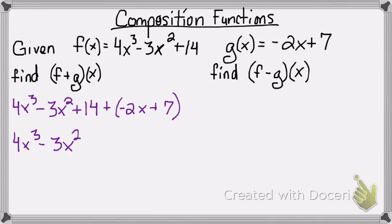And then just to stay in order, I'll bring down my negative 2x because there aren't any like terms. But now 14 plus 7, that gives me 21.